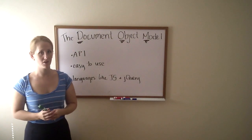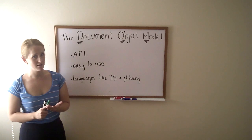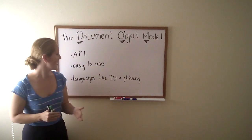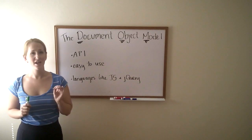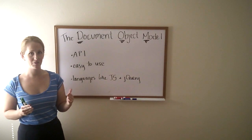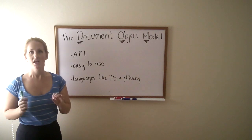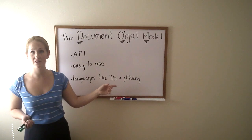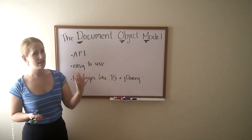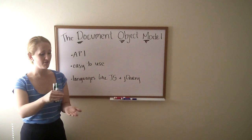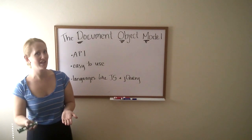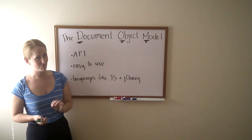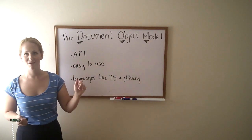What I want you to take away from this video is that the document object model is technically an API that is inside of your browser. It is easy to use, so even if you can't wrap your head around the concept of the document object model necessarily, don't be intimidated by it, and don't be afraid to start using languages like JavaScript and the library like jQuery to start changing the context of a page without changing the actual HTML. When you do that using these languages or other languages, you are manipulating the document object model.